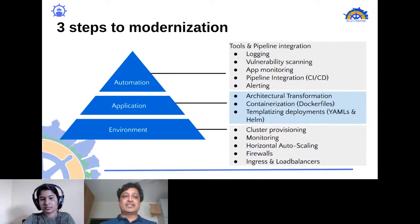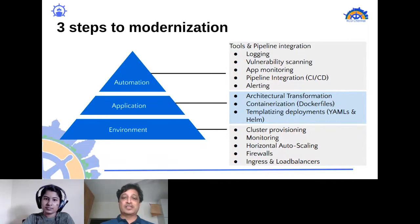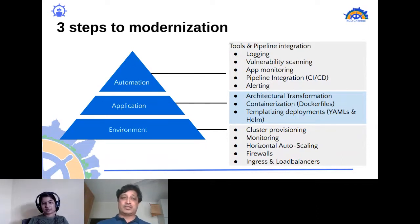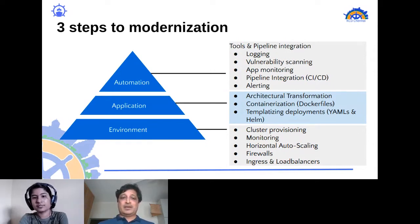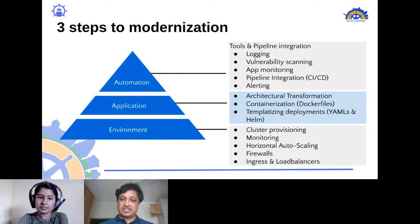Firewall is a very important piece — you want to properly set up all the network rules. You need load balancers set up to ensure application and network load balancing, and all ingress rules configured correctly. The application itself, running on a standalone server or VM, has to undergo an architectural transformation and be containerized.